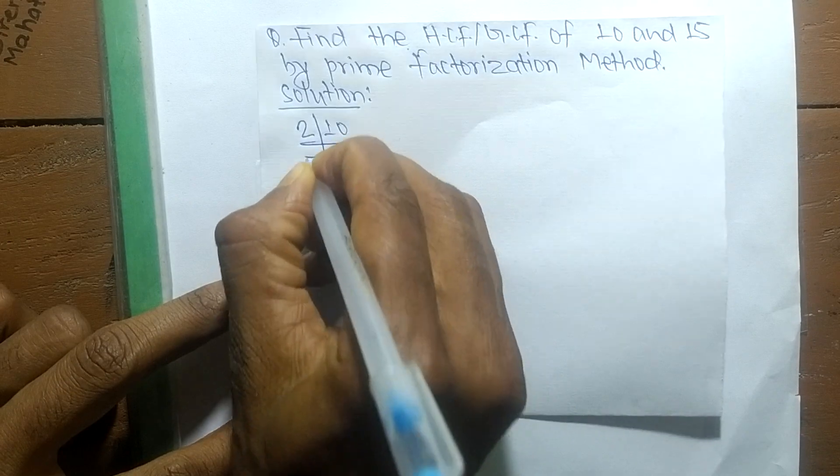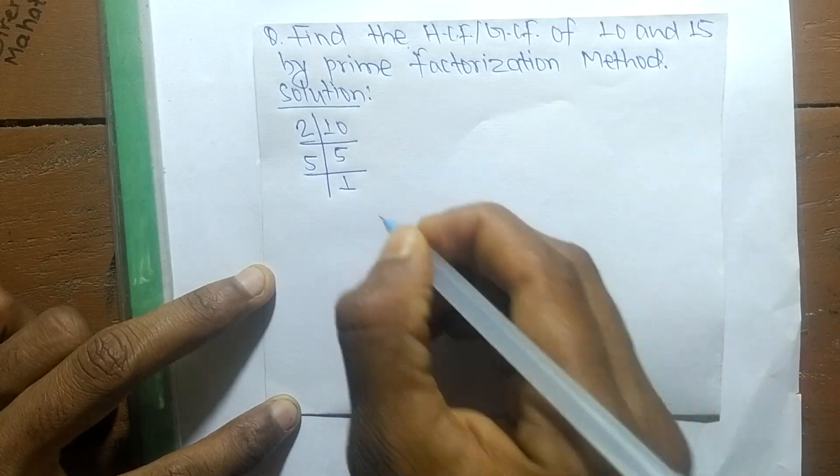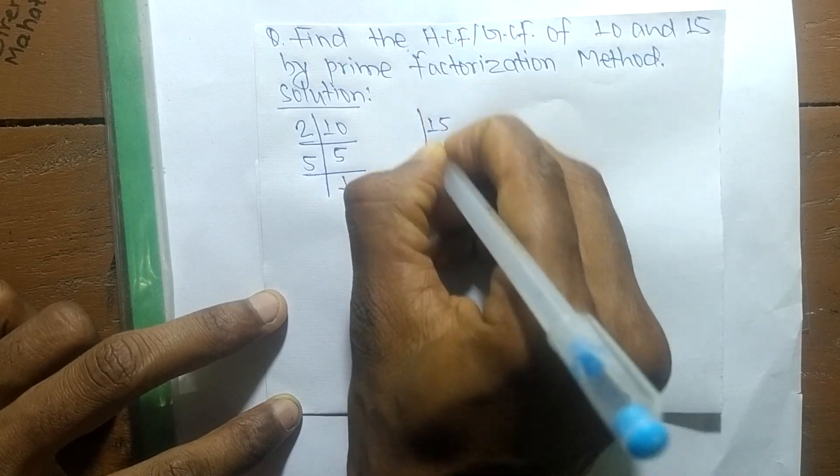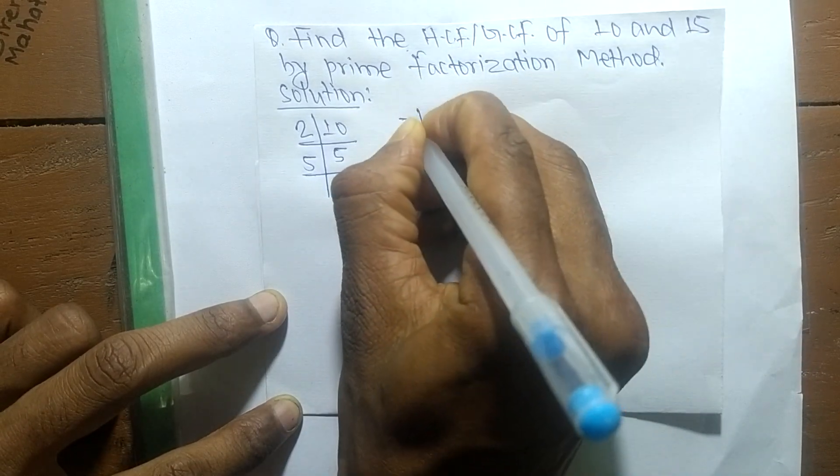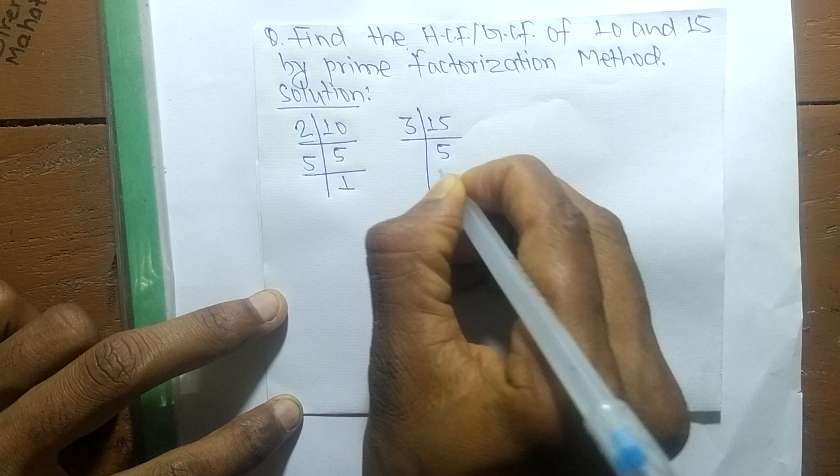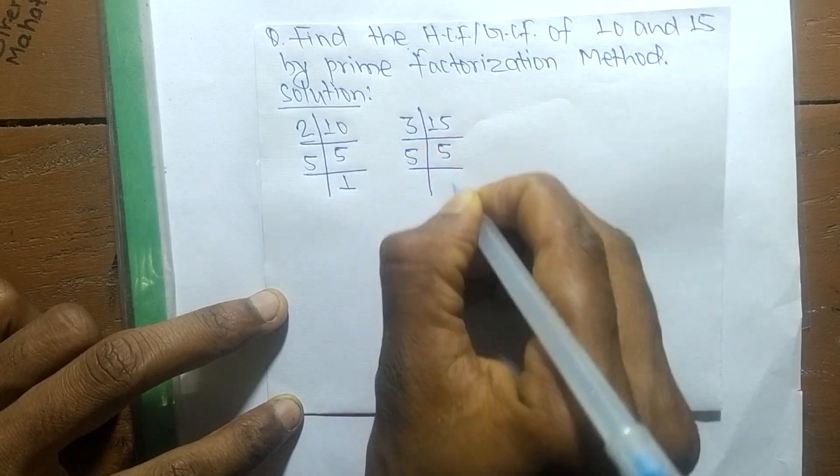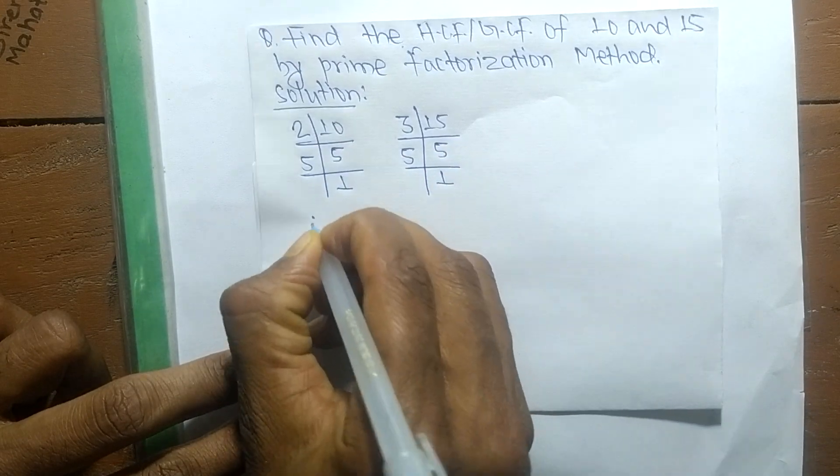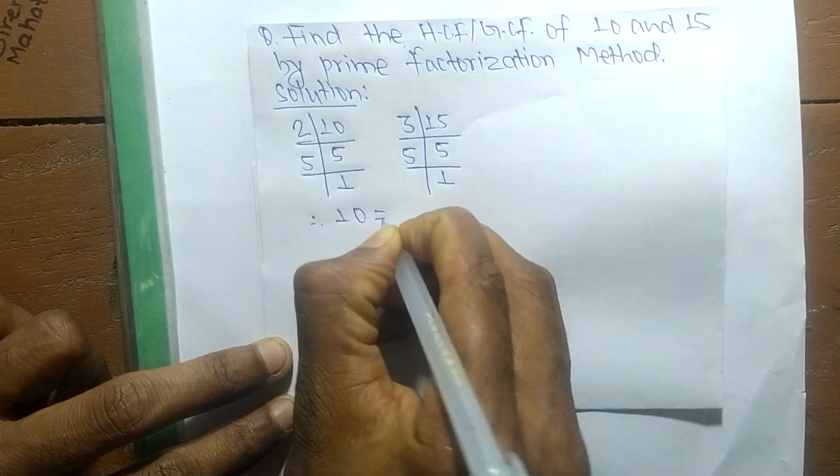In the same way, the prime factors of 15 is 3 times 5. From these prime factors, we can now write the equations.